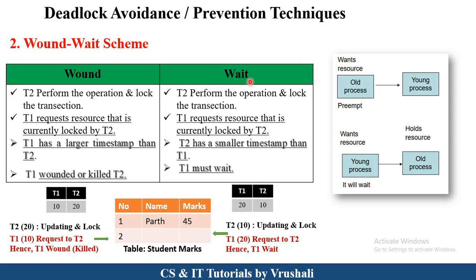Next is the 'wait' part of the wound-wait scheme. T2 (now the older transaction) updates the record and locks the transaction. The newer transaction requests the older transaction. When a new transaction requests an older transaction, the new transaction goes to waiting state — the older transaction completes its update, releases the lock, and then the younger transaction updates the same record. So in the wound-wait scheme: when an older process requests a younger process, the older process gets wound or killed; when a younger process requests an older process, the younger process goes to waiting state. These two schemes prevent or avoid deadlock in a database.